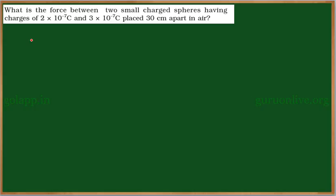What is the force between two small charged spheres having charges of 2×10⁻⁷ coulomb and 3×10⁻⁷ coulomb placed 30 centimeters apart in air?